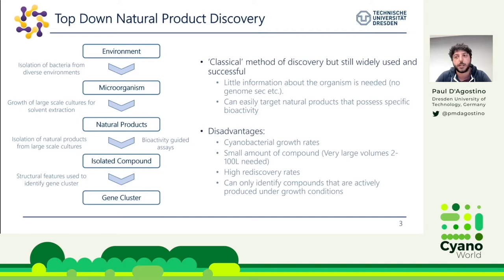More recently, there has been a rise of microbial genomics, mainly spurred by the decrease in sequencing costs. Along with this increase in sequencing, we've also had the development of bioinformatic tools such as antiSMASH, which screens a genome sequence to look for biosynthetic gene clusters — the genes that are responsible for producing the natural product.